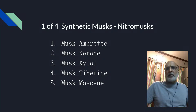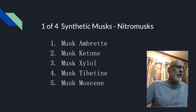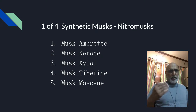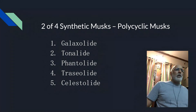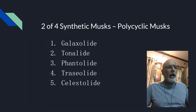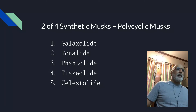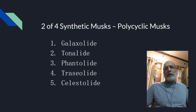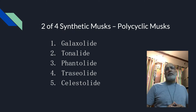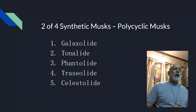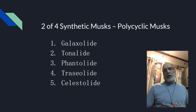So we come to polycyclic musk. Galaxolide, which we discussed in the previous session, tonolide, phantolide, traciolide and silistolide — these are the classic polycyclic musks available to modern perfumery.